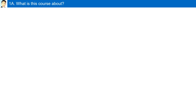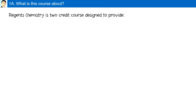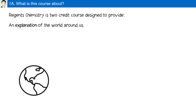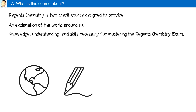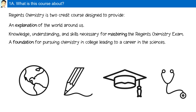What is this course about? Regions Chemistry is a two-credit course designed to provide an explanation of the world around us, the knowledge, understanding, and skills necessary for mastering the New York State Regents Chemistry exam, and a foundation for pursuing chemistry in college, leading to a career in the sciences.